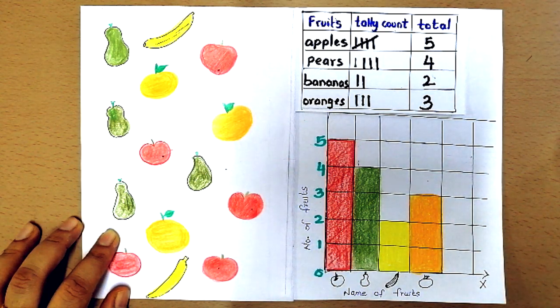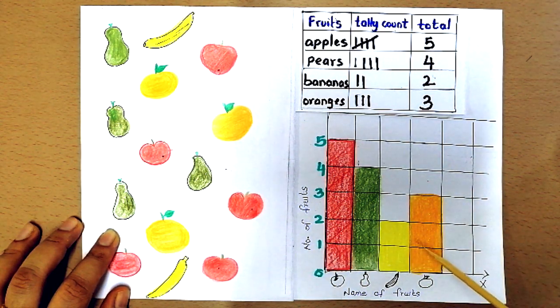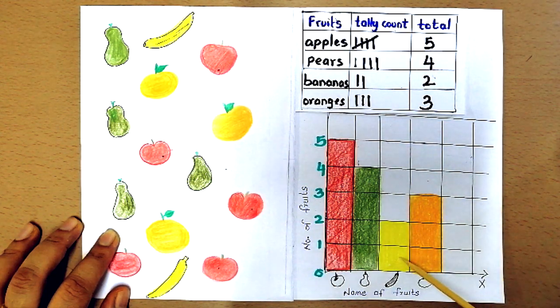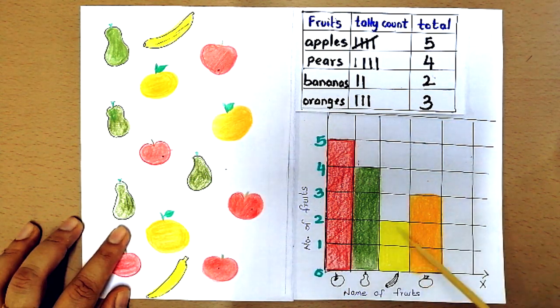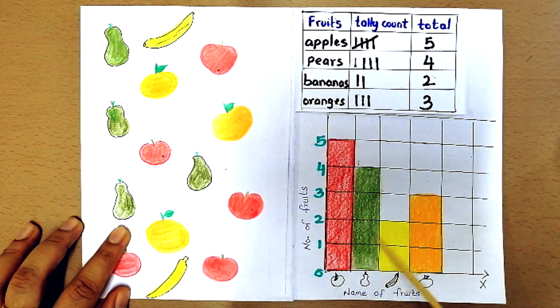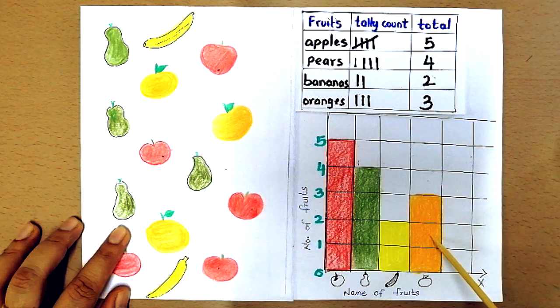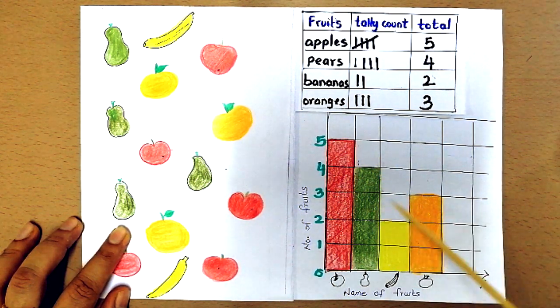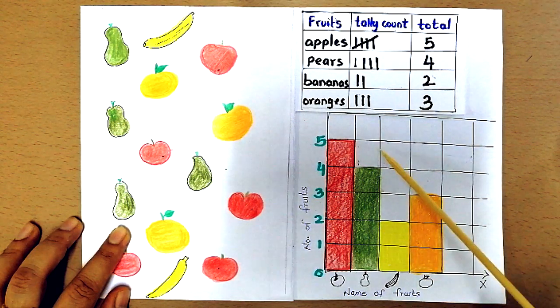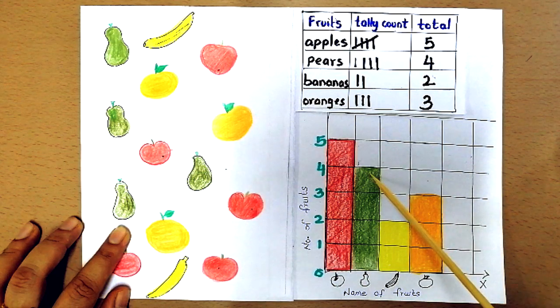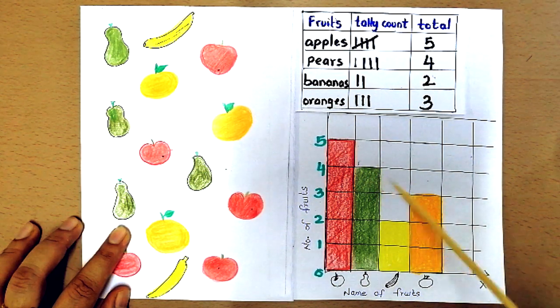Now which fruit has the lowest quantity? Yes, you are right, bananas. Now the next question is how many more pears did you buy than oranges? You can compare the blocks and see clearly that there is one extra block in pears. So you have bought one extra pear than oranges.